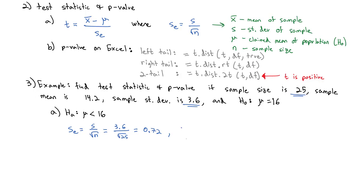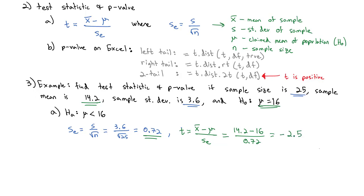Once we know the standard error, we calculate the test statistic t: the mean of the sample (14.2) minus the population mean from the null hypothesis (16), divided by the standard error (0.72). That gives us exactly negative 2.5 as our test statistic.